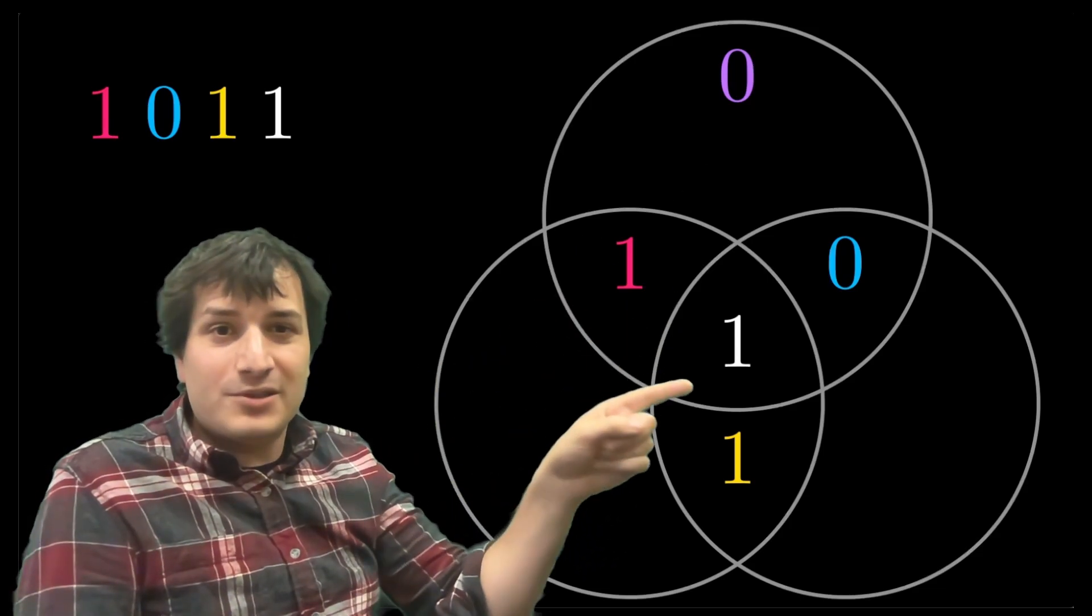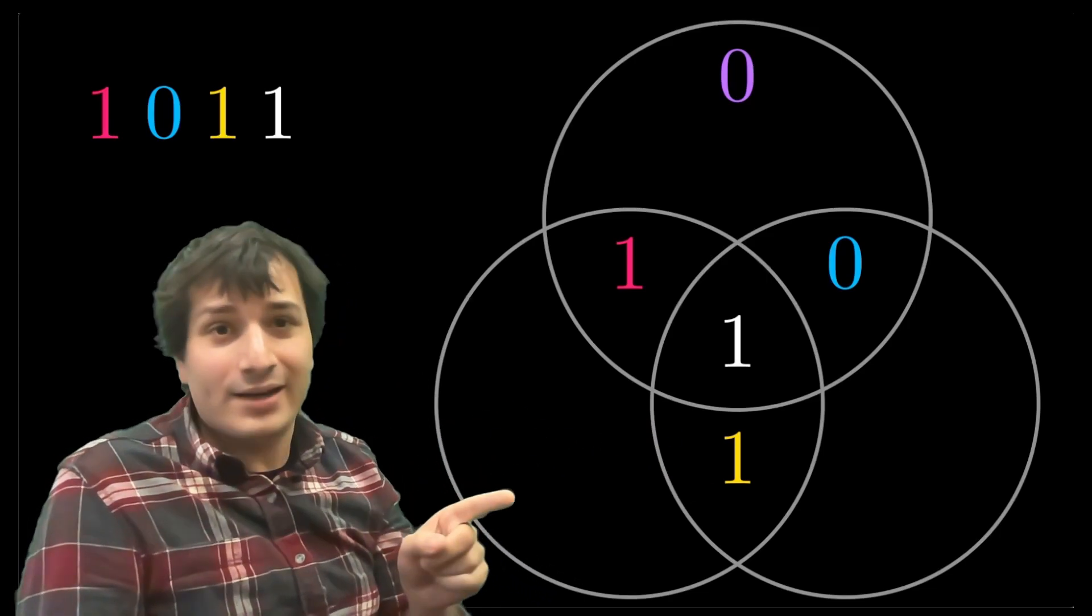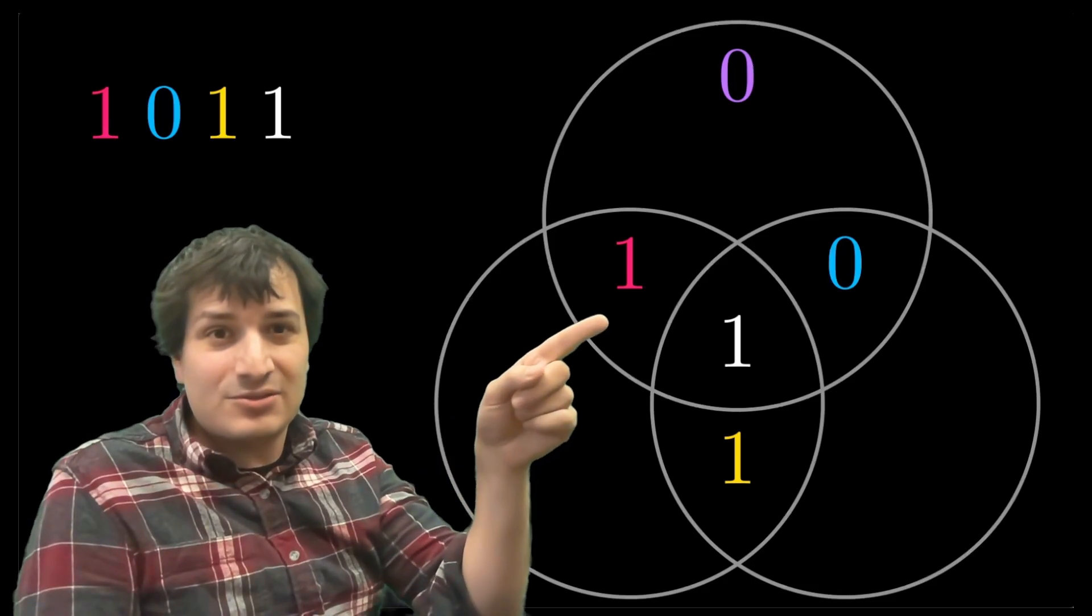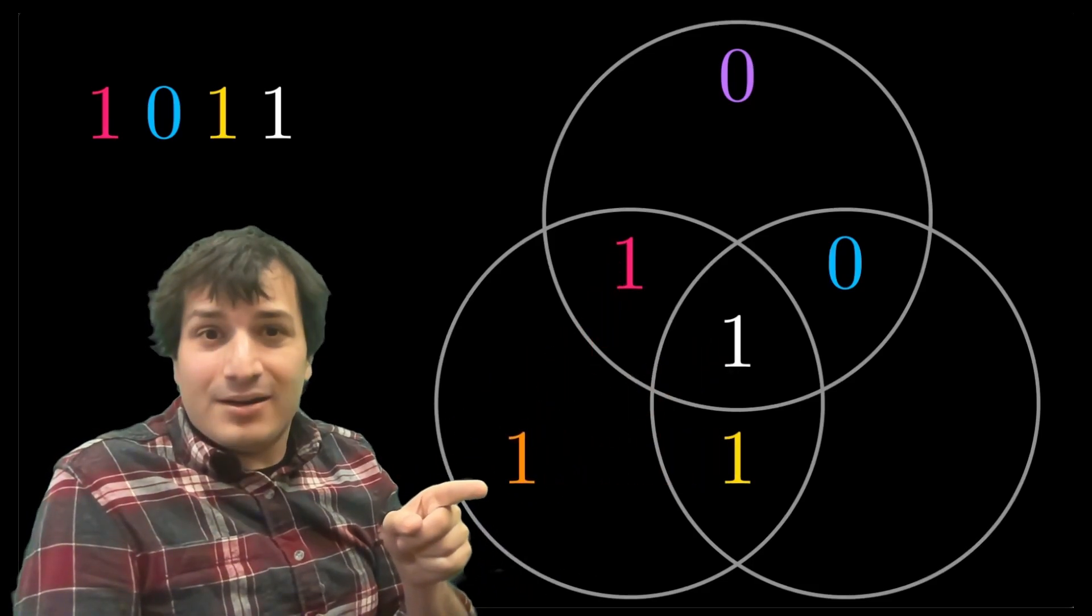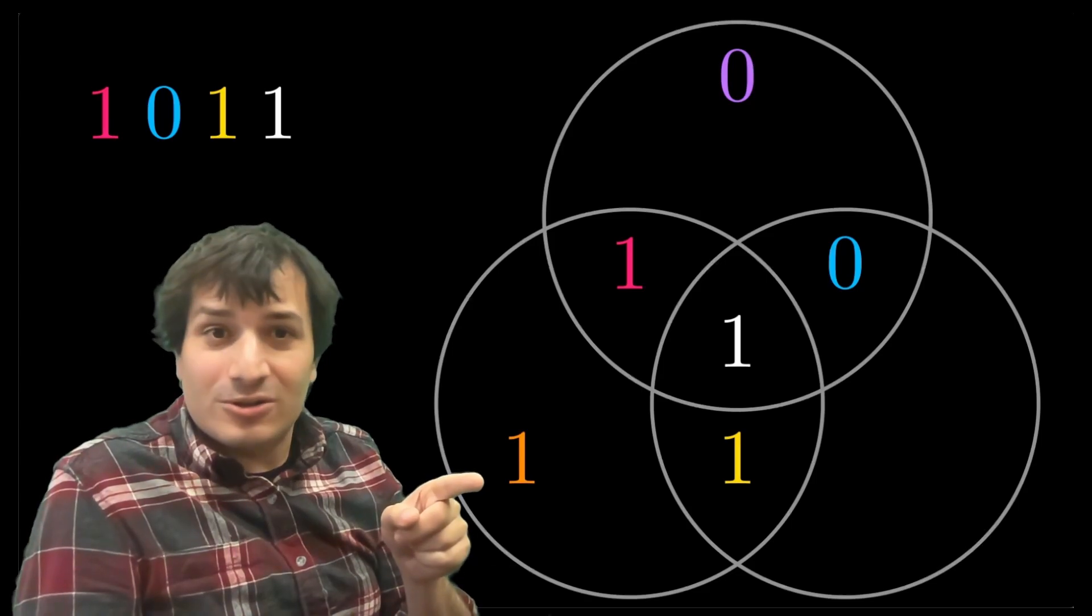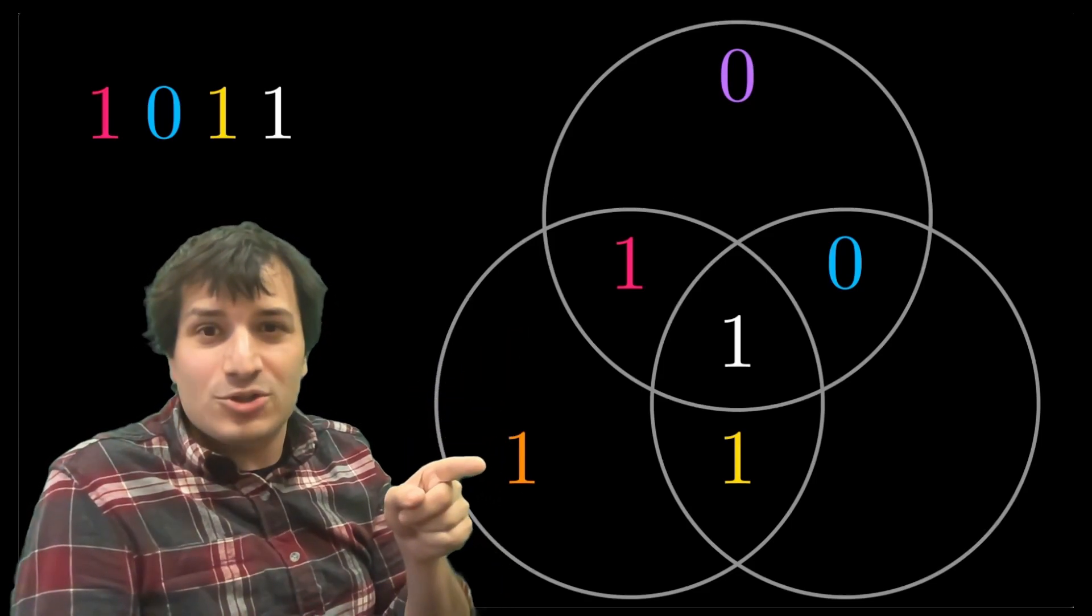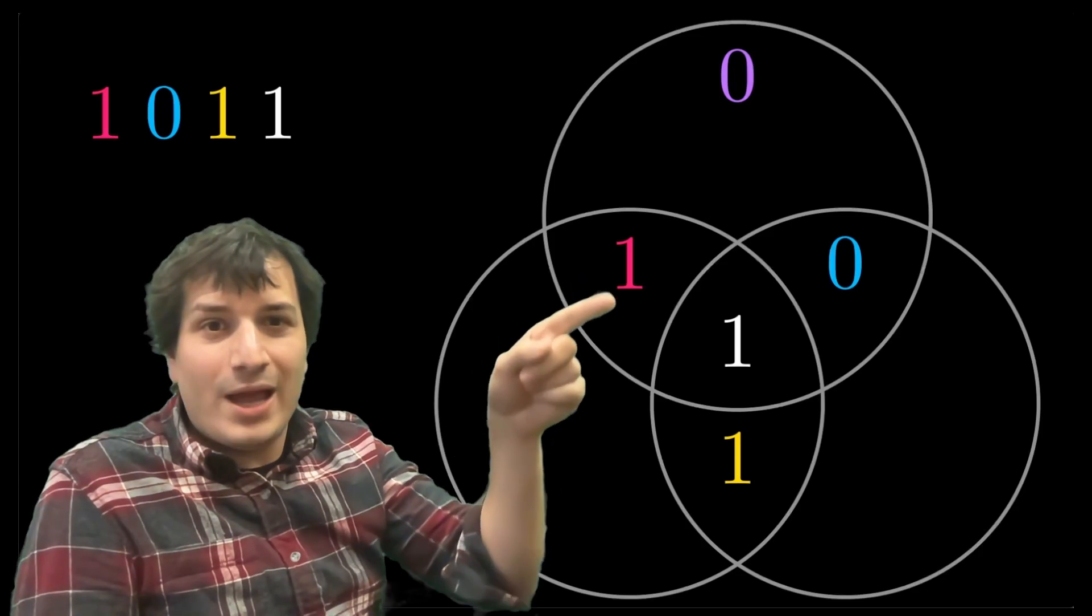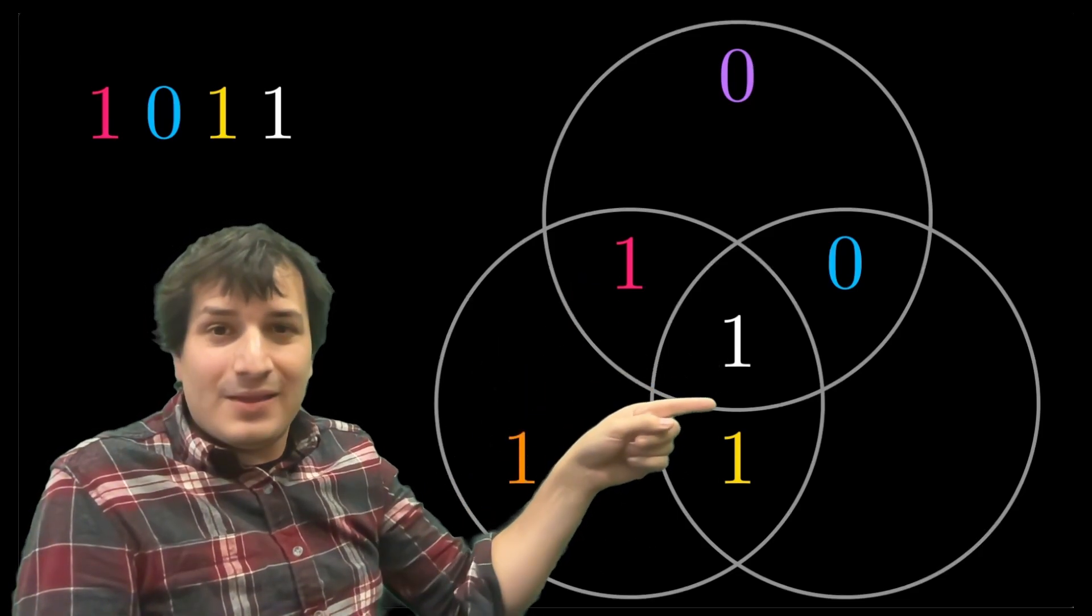Well, here we got one plus one plus one. That's an odd number. So to make it even, we're going to add a one over here. So you can kind of think of this one, one, one combines to give the error checking bit of one over here in this circle. And I've kind of color coded them so you can see where they come from. This orange error checking one came from the red, the white, and the yellow combined to give the orange one over here. What about that last circle over there?